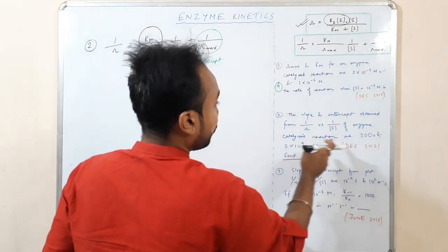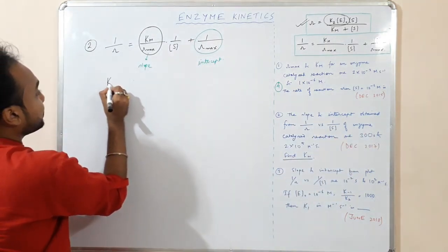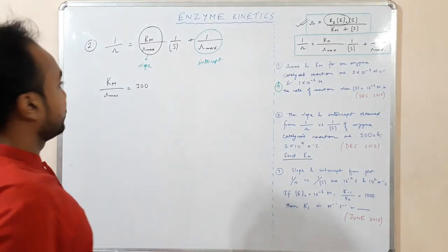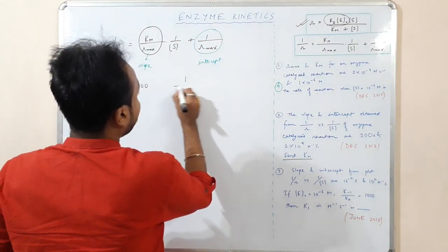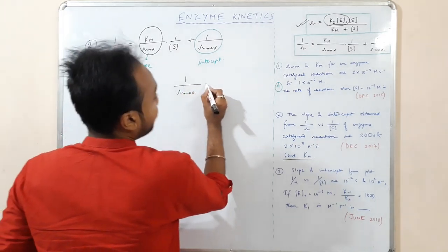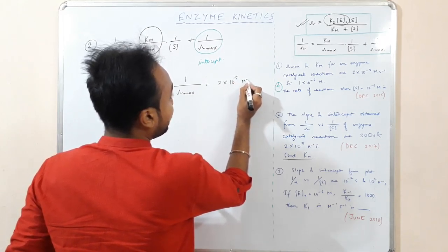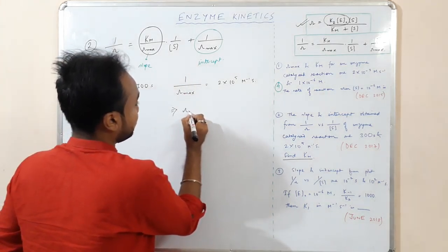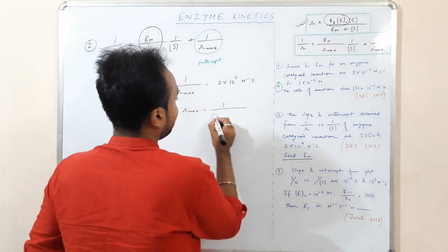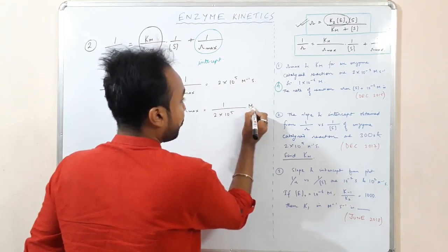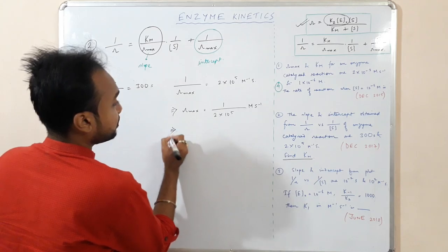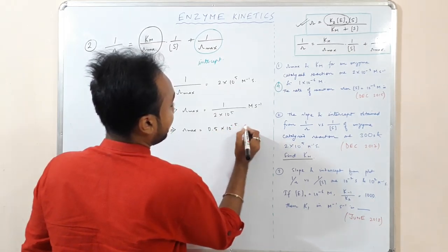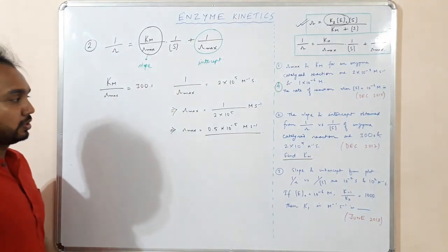The slope is given as 300, so Km/Rmax = 300. The intercept 1/Rmax is 2×10⁵ mol⁻¹·s. Therefore Rmax = 1/(2×10⁵) = 0.5×10⁻⁵ mol·s⁻¹.